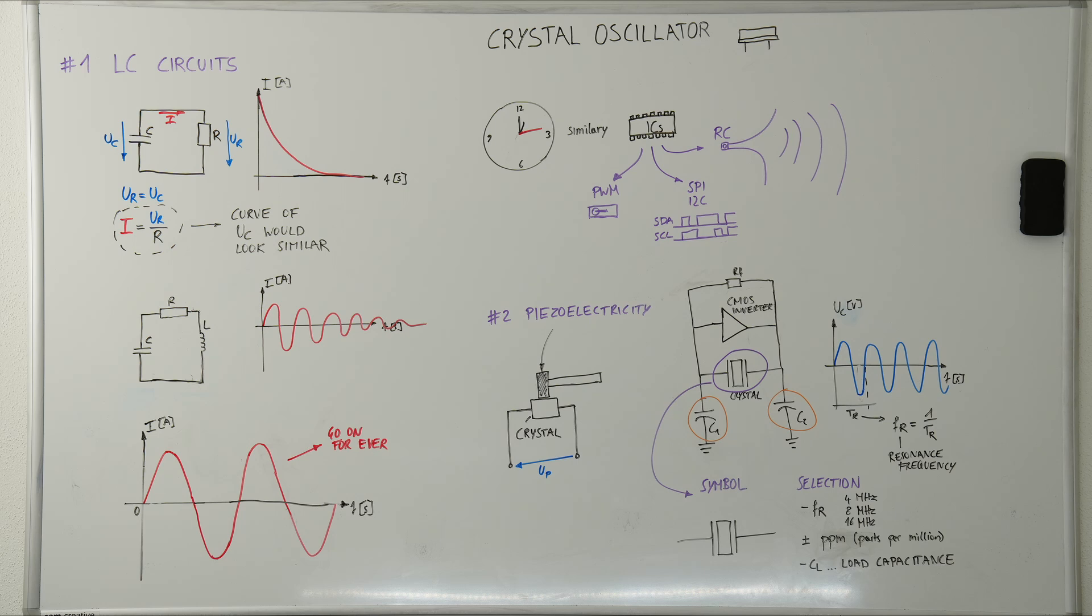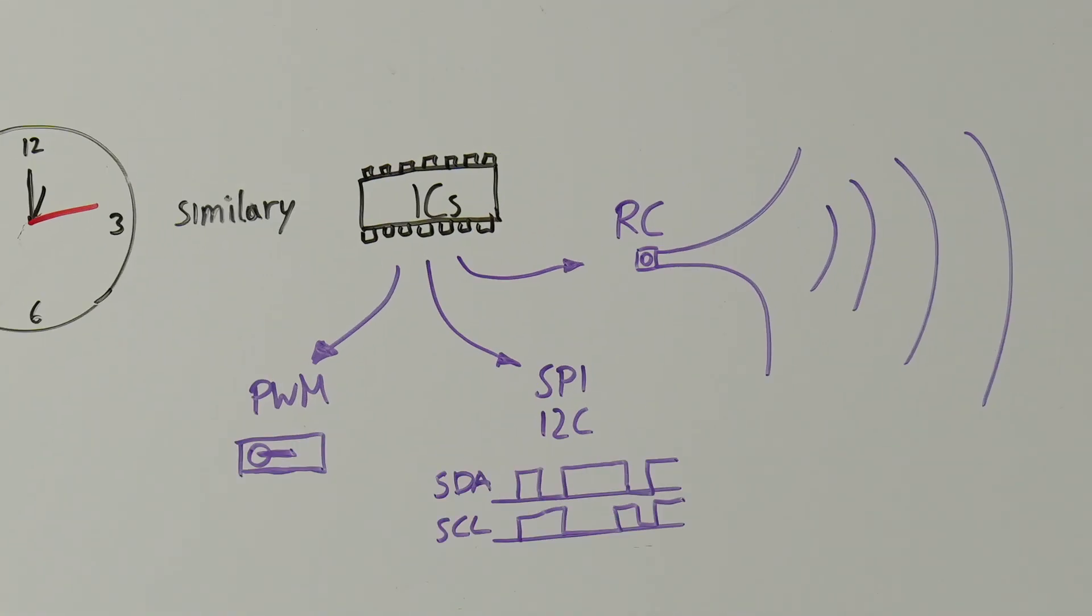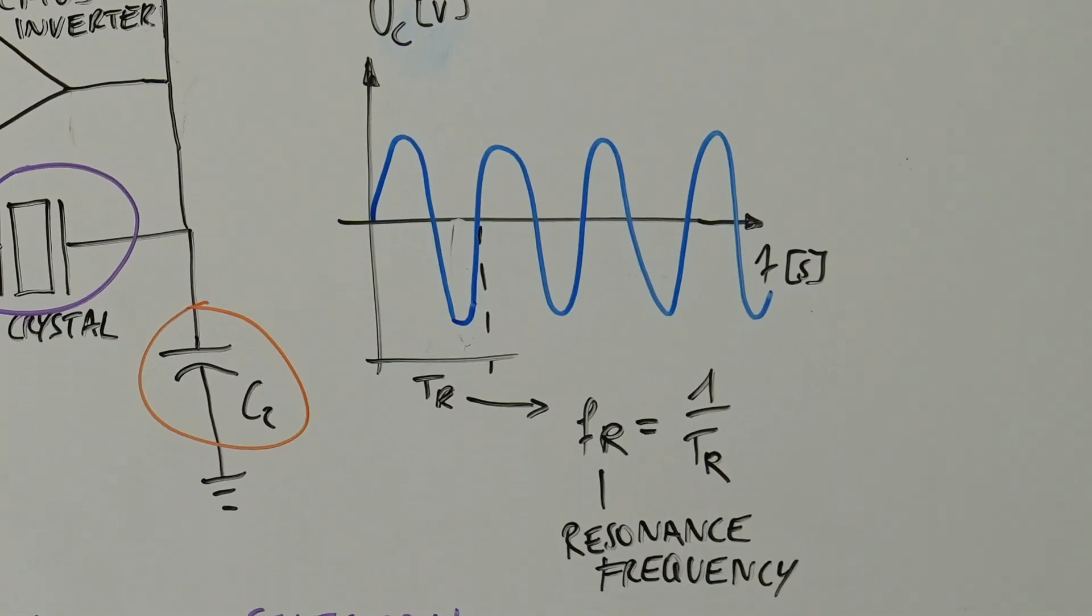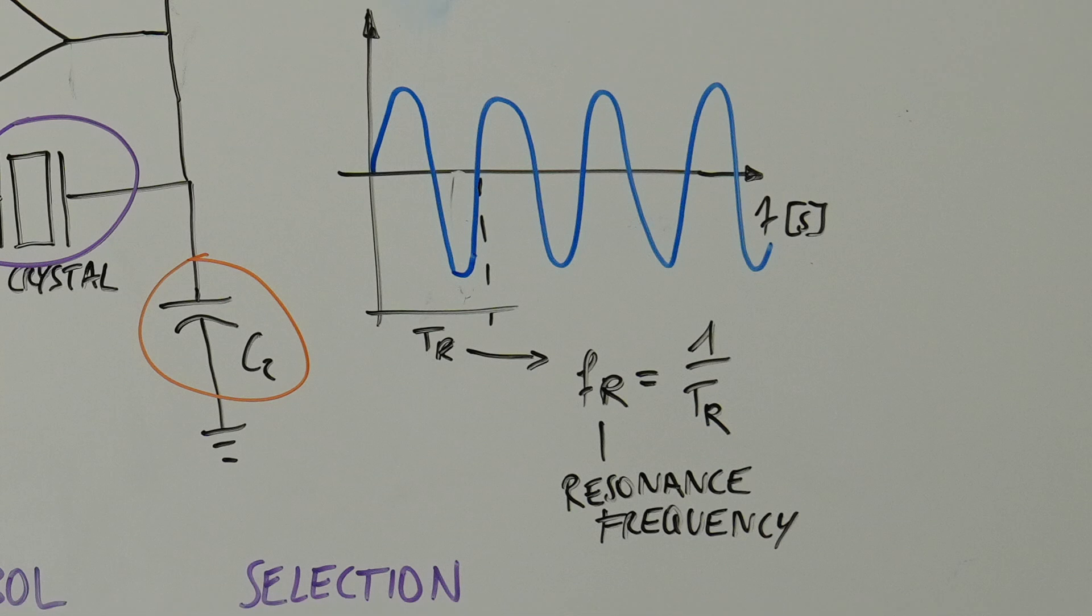Now, let's summarize. To ensure precise timing for communication protocols and integrated circuits, we commonly utilize quartz crystals. When a voltage is applied to a quartz crystal, it contracts and subsequently releases a voltage as it returns to its original state. By amplifying and feeding back this voltage output into the crystal, oscillation is achieved. This oscillation, characterized by the crystal's natural resonance frequency, is notably more power efficient than other methods as it minimizes energy loss per cycle.